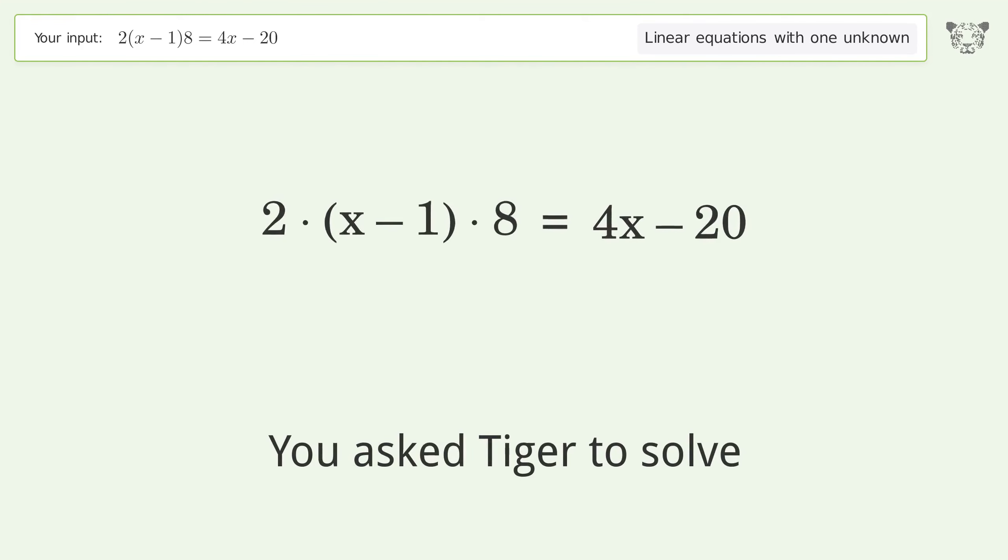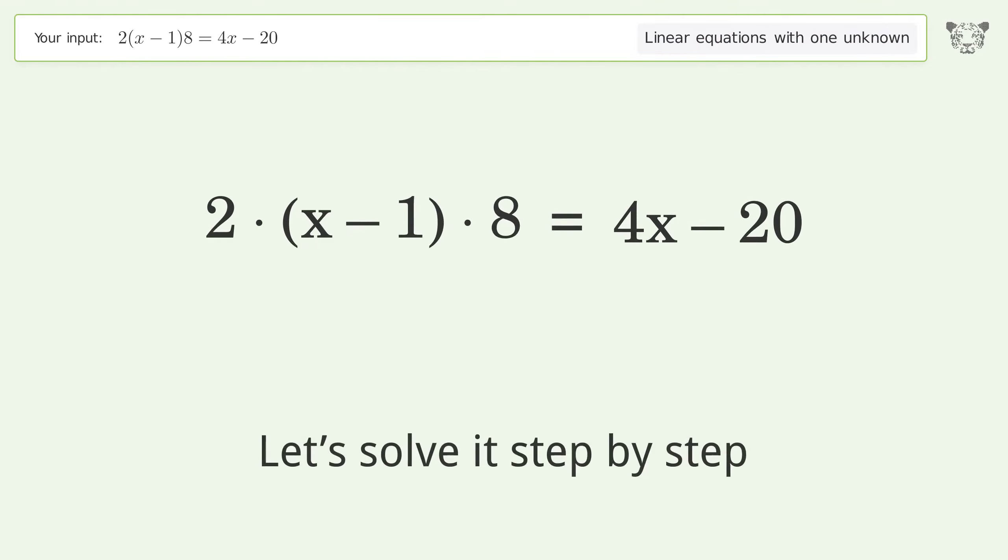You asked Tiger to solve this. This deals with linear equations with one unknown. The final result is x equals negative one over three. Let's solve it step by step.